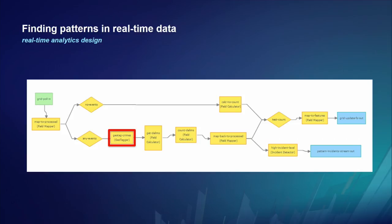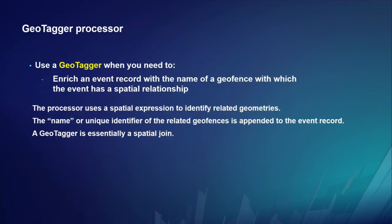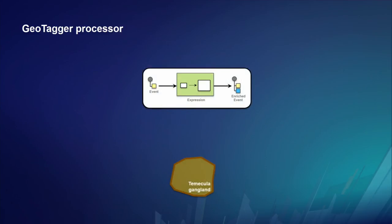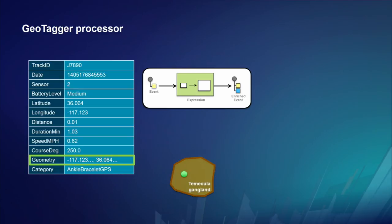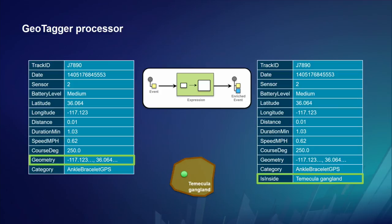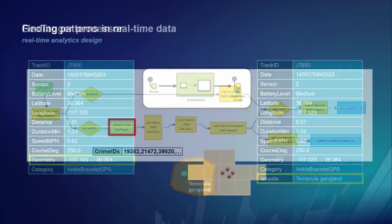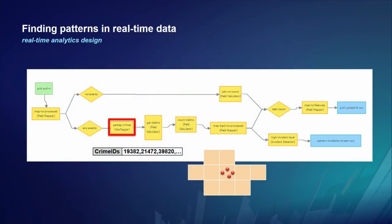The geotagger is used when you want to enrich an event record with the name or unique identifier of a geo-fence with which the event shares a spatial relationship — it's essentially a spatial join. In this demo, it detects when event geometry intersects with geo-fences from the crime point set. If there's more than one match, the geotagger generates a comma-separated list of matching geo-fence identifiers.